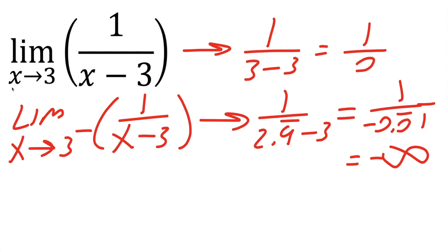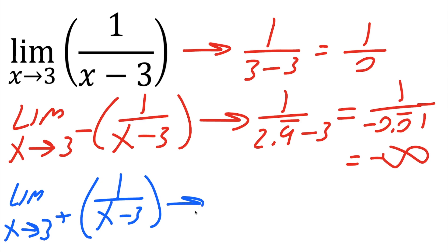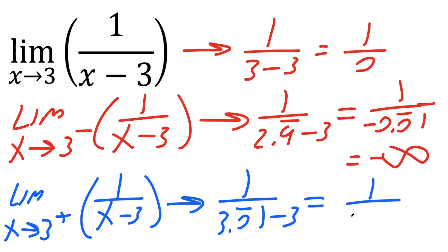Our problem is the limit as x approaches three, not three to the left. So we need to know what is the limit as x approaches three to the right. If it's the same number — negative infinity — then we can say the limit as x approaches three is negative infinity. But if it's different, we have to say the limit does not exist. So let's try the limit as x approaches three to the right: one divided by x minus three. Three to the right means 3.000 repeated zeros one, and we get one divided by a very, very small positive number.